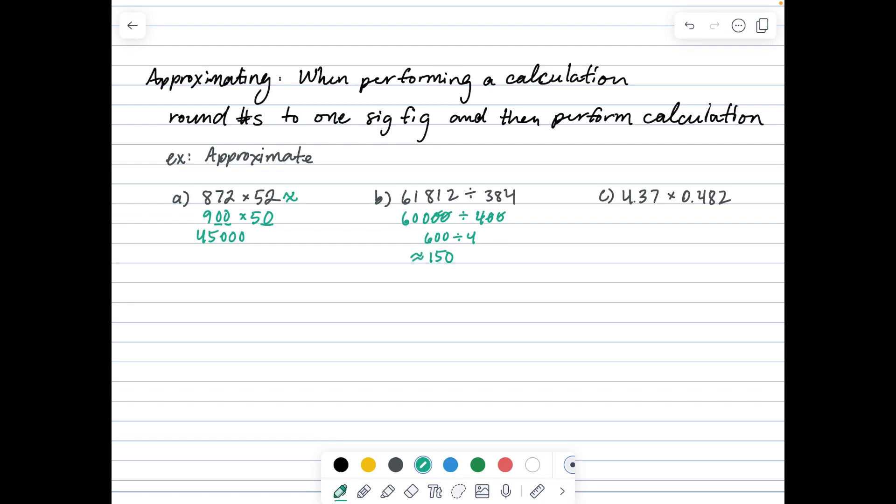Part C: round both to one significant figure. 4.37 is approximately 4, 0.482 is approximately 0.5, and 4 times 0.5 or 4 times a half is just 2.